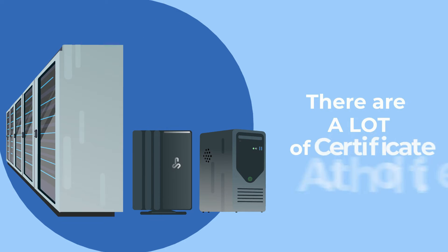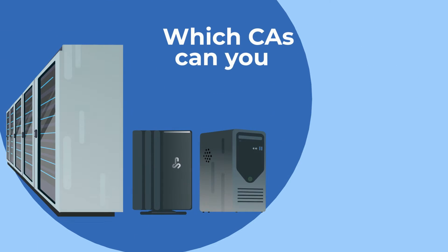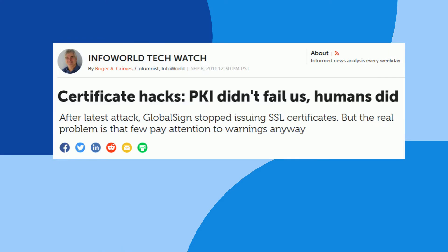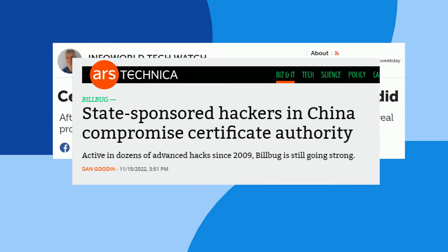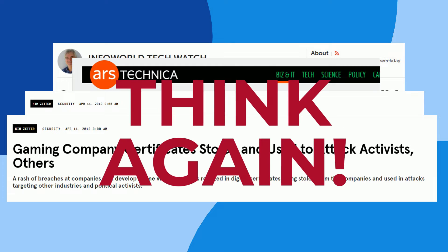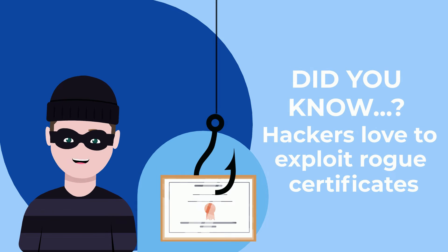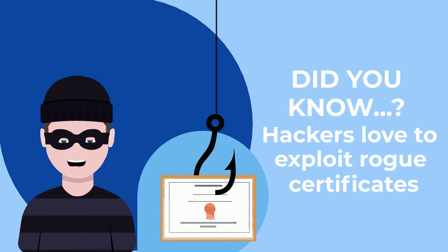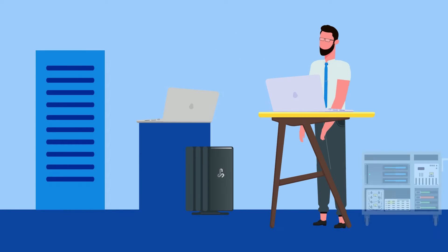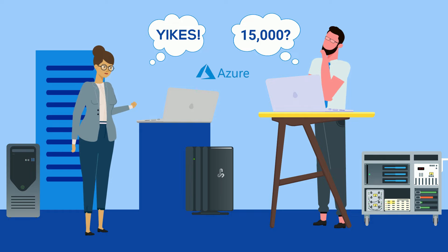But with so many certificate authorities out there, how can a website owner fully ensure they're partnering with the right ones? If you don't think certificate issuance and legitimacy is a major issue, think again. Did you know that hackers commonly utilize rogue certificates to set up phishing subdomains? Each month, in Azure alone, researchers at Keto's uncover around 15,000 vulnerable subdomains.